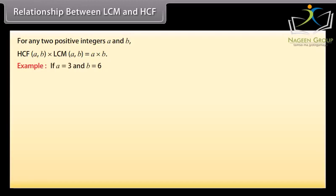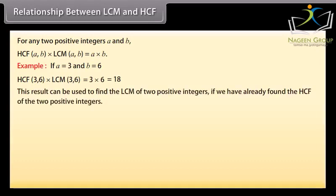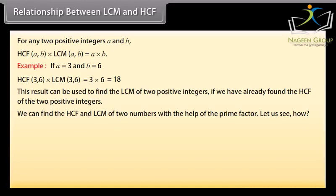Example: If A equals 3 and B equals 6, HCF(3,6) into LCM(3,6) equals 3 into 6 equals 18. This result can be used to find the LCM of 2 positive integers if we have already found the HCF of the 2 positive integers. We can find the HCF and LCM of the 2 numbers with the help of the prime factors.